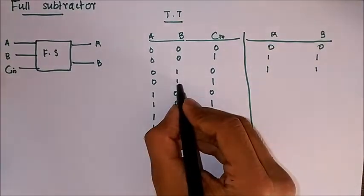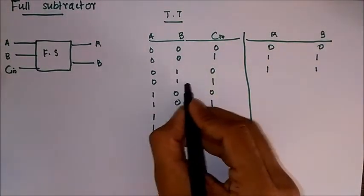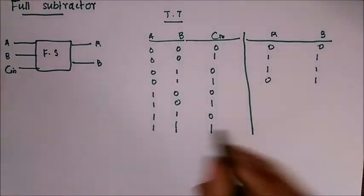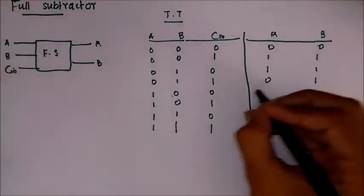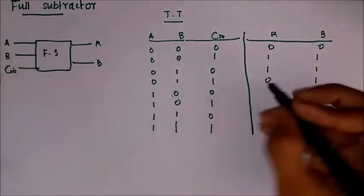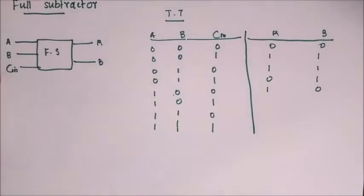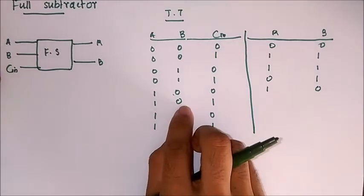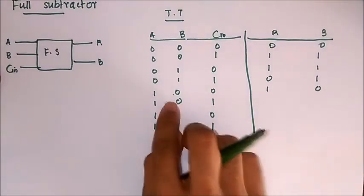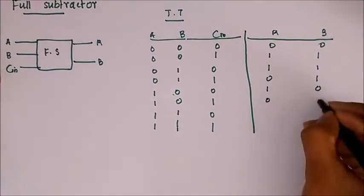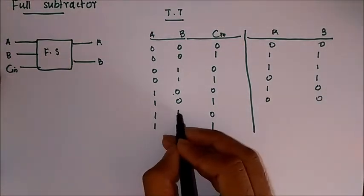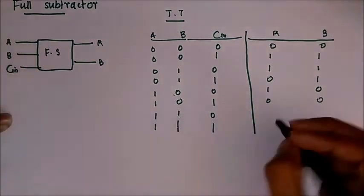Similarly 0 is 1 with a borrow 0, and 1 borrow. And 0 0 minus 1, 1 1 minus 0, 1 1 0, 1 1 minus 1 is 1 with a borrow of 0. 1 1 minus 0 is 1 with a borrow of 0.